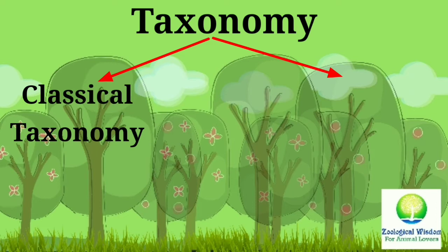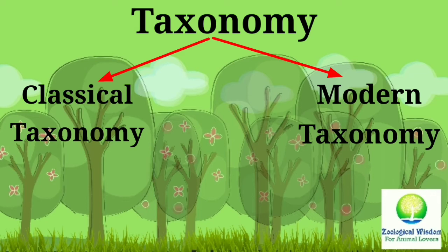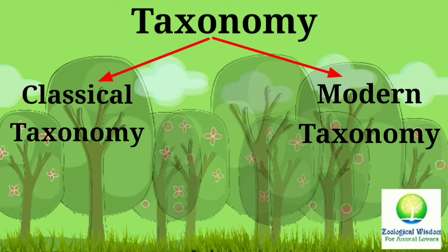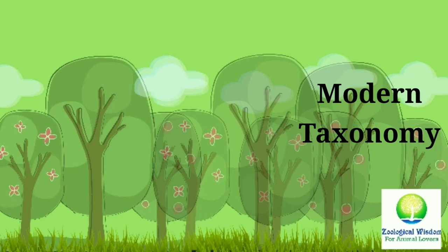The second branch is Modern Taxonomy or New Systematics. The term New Systematics was proposed by Sir Julian Huxley in 1940. In New Systematics, species are considered interrelated, mutable, and the work of gradual modification, in conformity with the facts of evolution.